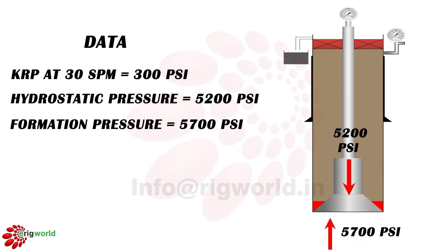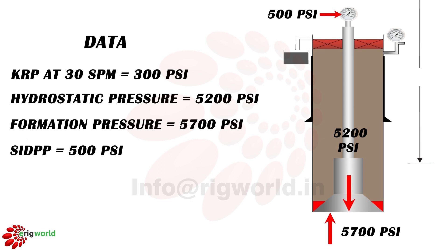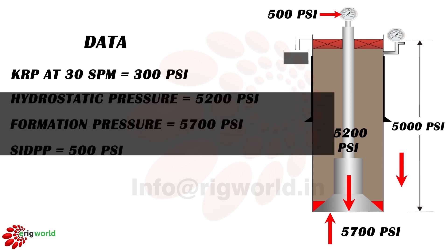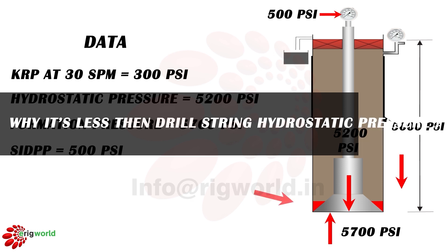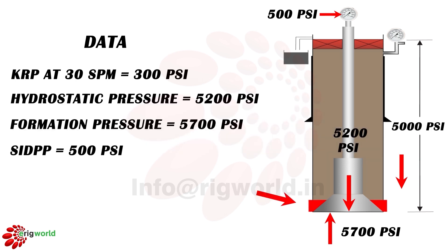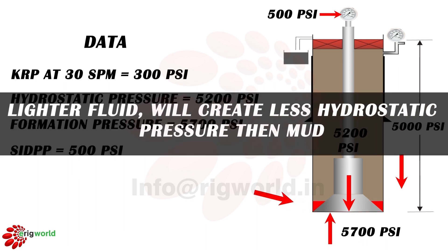The drill pipe will show the differential pressure between formation pressure acting upwards and mud hydrostatic pressure in the drill pipe acting downwards — that is 500 psi. Annulus side: hydrostatic pressure in the annulus acting downwards is 5000 psi, which is less than drill string hydrostatic pressure because influx present in the annulus is lighter than mud, and lighter fluid creates less hydrostatic pressure.